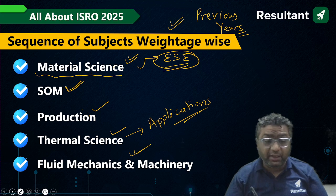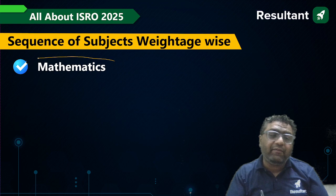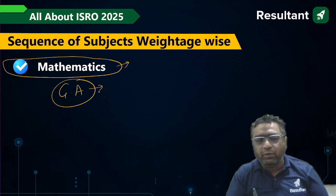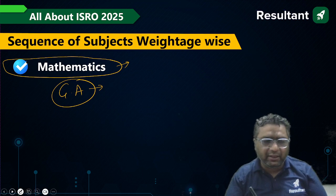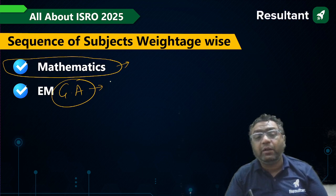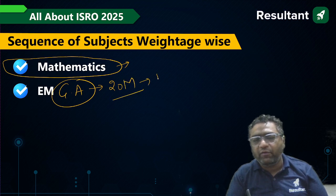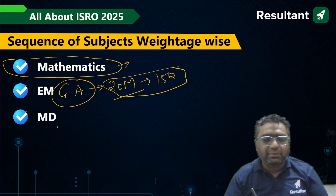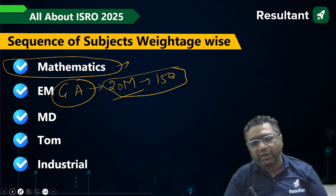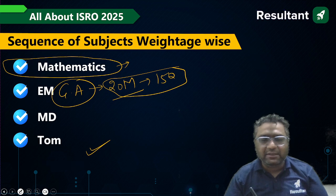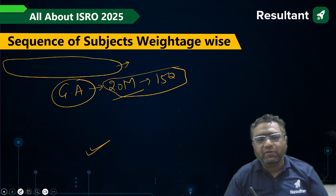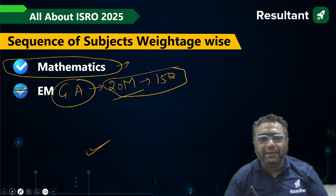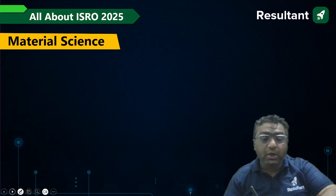Next in weightage is Fluid Mechanics and Machinery. Previously, Mathematics was also part of this paper, but now General Aptitude has been added with a fixed weightage of 20 marks for 15 questions, so I am not counting that separately — everything I am telling you is for the technical part. Engineering Mechanics is asked very less, Machine Design is asked very less, Theory of Machines also does not have too much weightage, and the same is with Industrial Engineering.